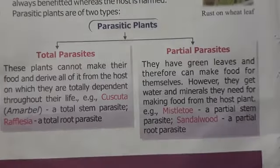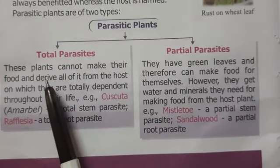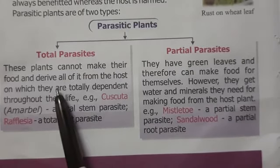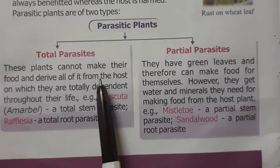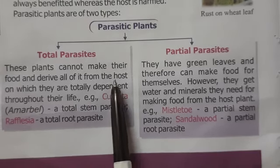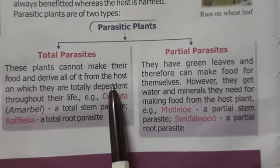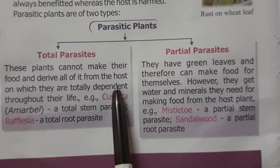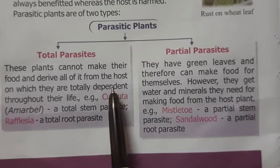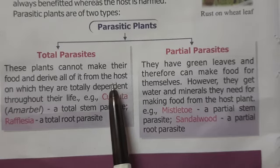Total parasites are plants that cannot make their own food and are totally dependent on their host. Host means the animal or organism on which the parasite lives. For example, the mosquito is the parasite and we human beings are the host, because the mosquito is sucking blood from our body.